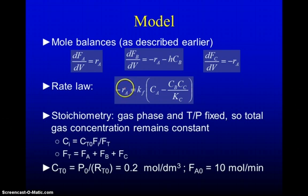With all of that information we can describe our differential equations. The rate of consumption of A because it's a reversible reaction is given by the forward rate coefficient times the concentration of A minus the reverse which is 1 over the equilibrium coefficient times the product of the two products concentration of B and C. We can write the concentration of a species as the total concentration times the molar flow rate of that species over the total molar flow rate where the total molar flow rate is given by the sum of all species.